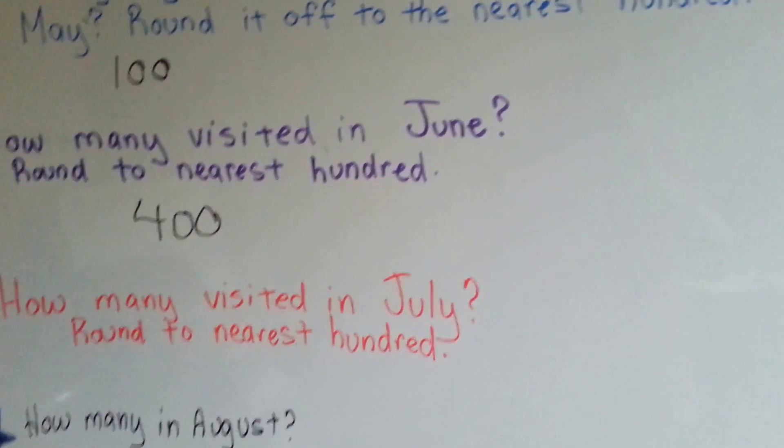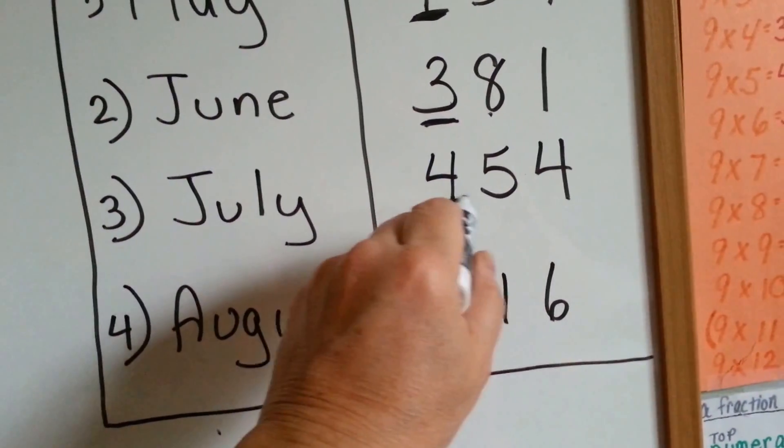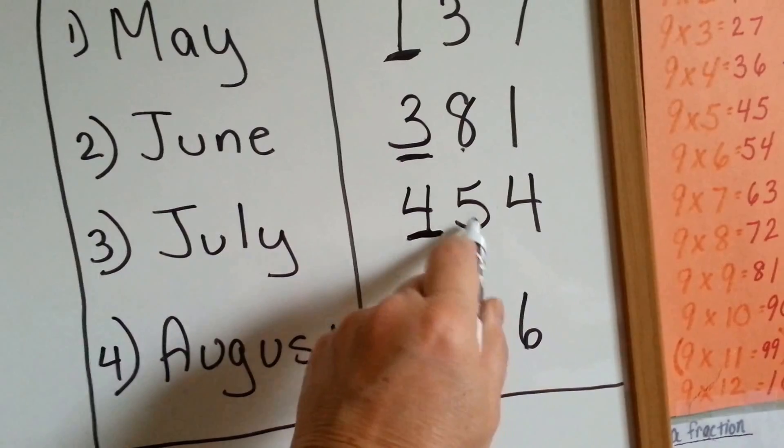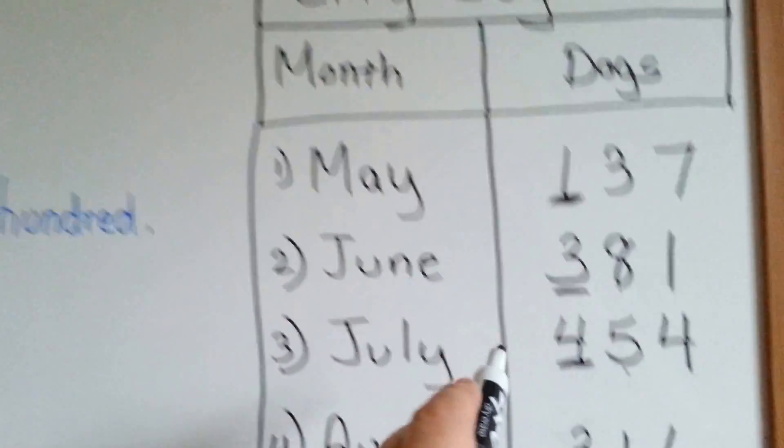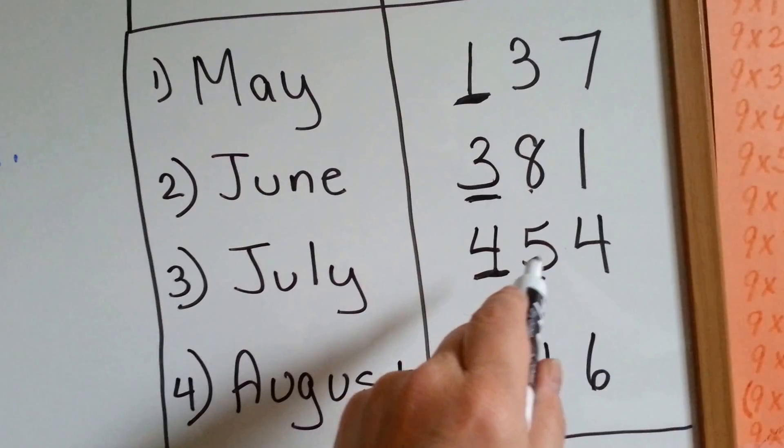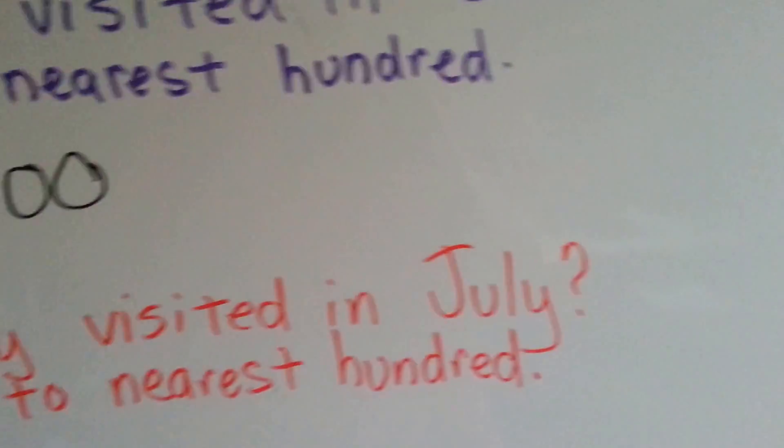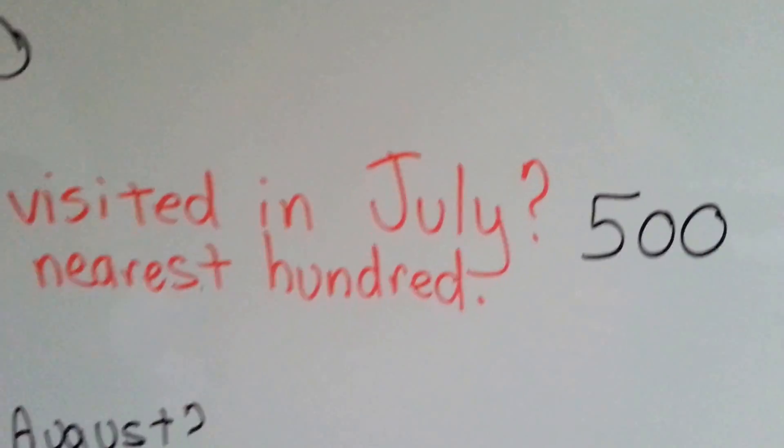Around 400 dogs visited. How many in July? 454. Well, here's the hundreds. Here's the one next to it, to the right, that's going to tell it what to do. 5 says to go up. So the 4 is going to become a 5, and now that their job is done, they become zeros. So approximately 500 dogs visited the dog park in July.